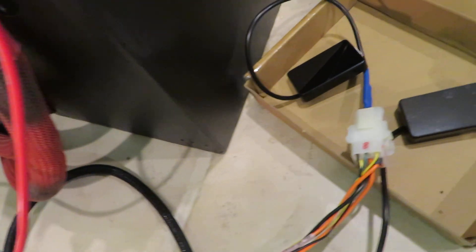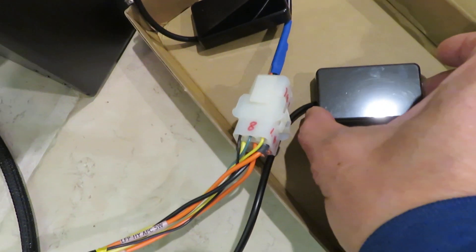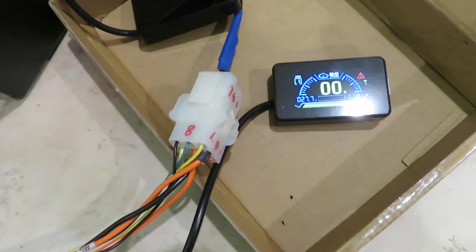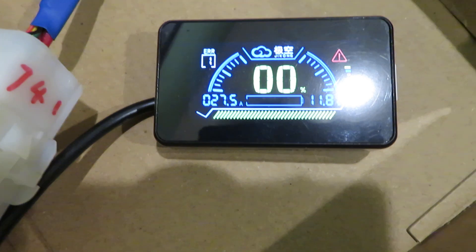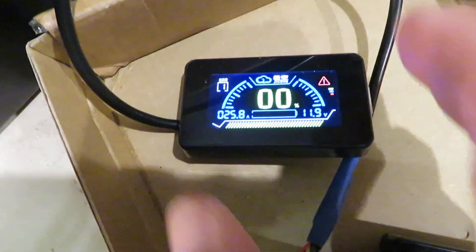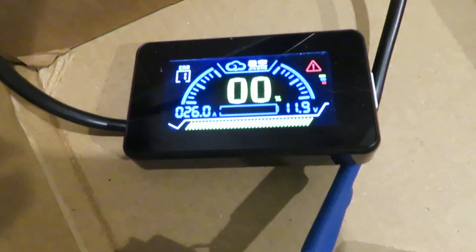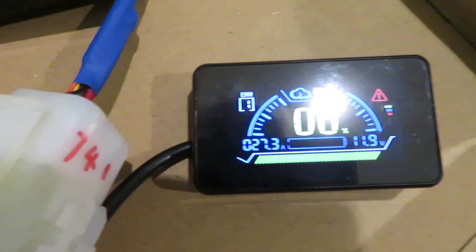And we can also check out on the display. So this display sets charging current is 27.5 amps and this is 26 amps, so 26 amps and 27.2 amps.